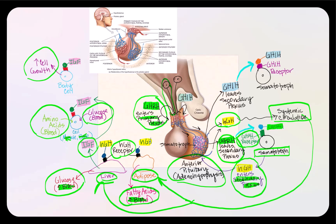Growth hormone-inhibiting hormone, or somatostatin, produced by another neuroendocrine cell of the hypothalamus, also enters the primary plexus, travels down the hypophysial portal veins, enters the secondary plexus, and GHIH leaves the secondary plexus to bind to its receptor on the somatotrope, inhibiting human growth hormone secretion.